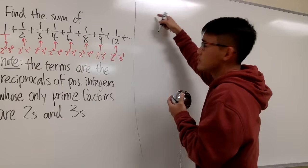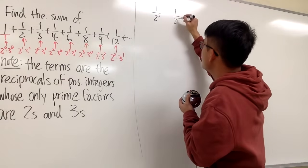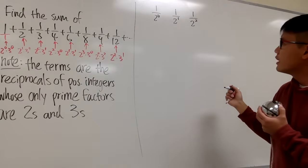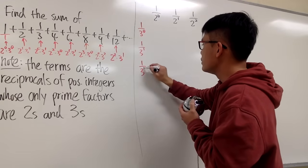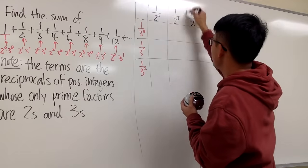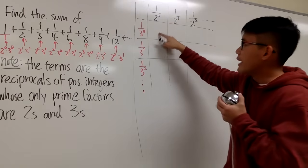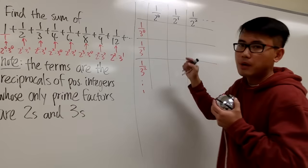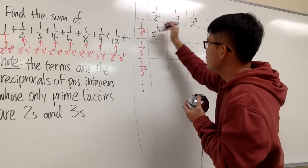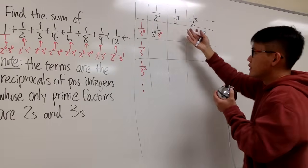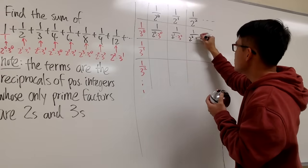Let's look at the products in this way. I'll put down 1 over 2 to the 0, then 1 over 2 to the 1st, then 1 over 2 to the 2nd, and so on. On the side, let me put down the 3s: 1 over 3 to the 0, 1 over 3 to the 1st, 1 over 3 to the 2nd, and so on. We've made a chart. For each box, I'm going to multiply 1 over 2 to some power with 1 over 3 to some power. So the first row has entries 1 over (2^i × 3^0) for increasing i.